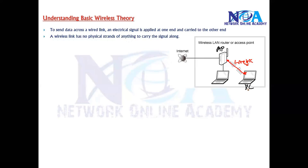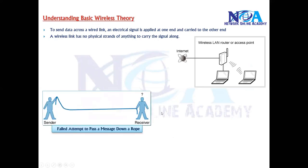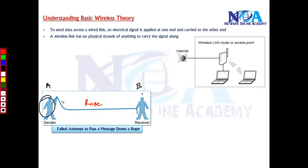Let's take an example: this is my access point and this is my PC, and we say they are connected, but air — the free space — is your medium which carries the signals. These signals we call frequency signals. To understand how exactly signals are carried between two wirelessly connected devices, consider this example: there is a sender trying to send information to a receiver on the other side — A and B — and they are connected via a long rope, which represents the free space.